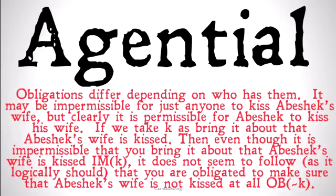If we take K as 'bring it about that Abhishek's wife is kissed,' then even though it is impermissible that you, as just a random person on the street, bring it about that Abhishek's wife is kissed, it doesn't seem to follow that you are obligated to make sure that no one kisses Abhishek's wife. Just because it's impermissible for anyone on the street to kiss her doesn't mean everyone is obligated to prevent it. However, our logical definition of impermissibility simply is: it's obligatory that not K. So we have a problem.